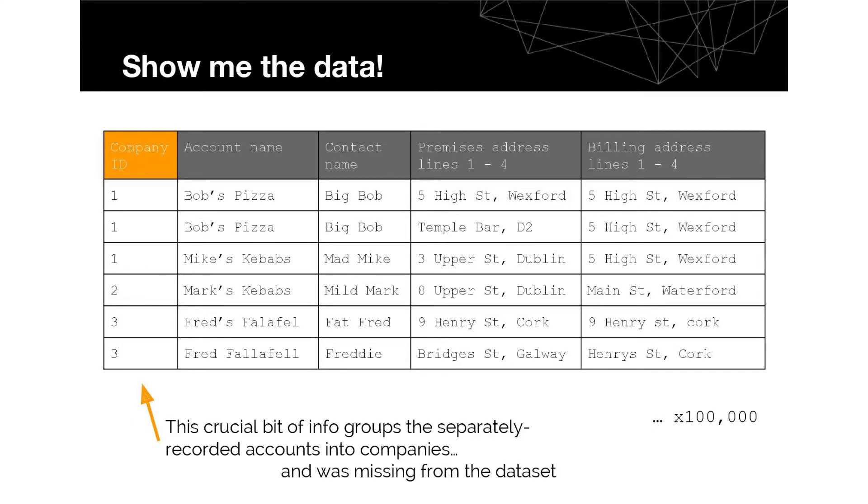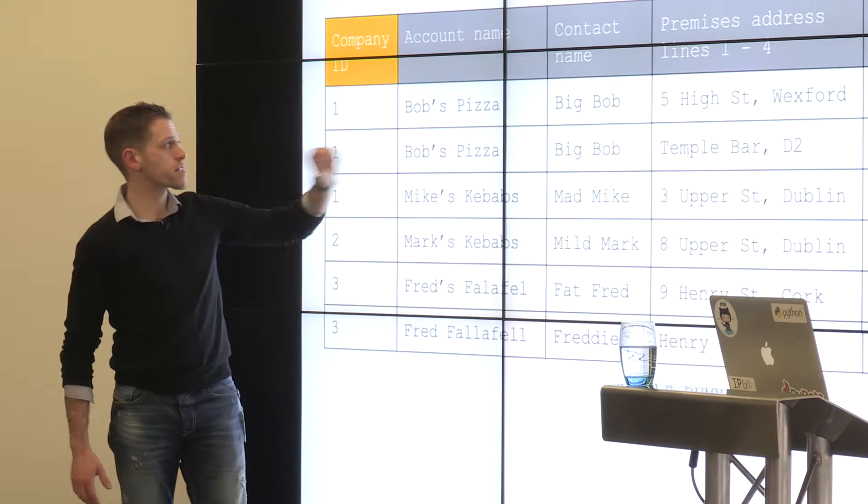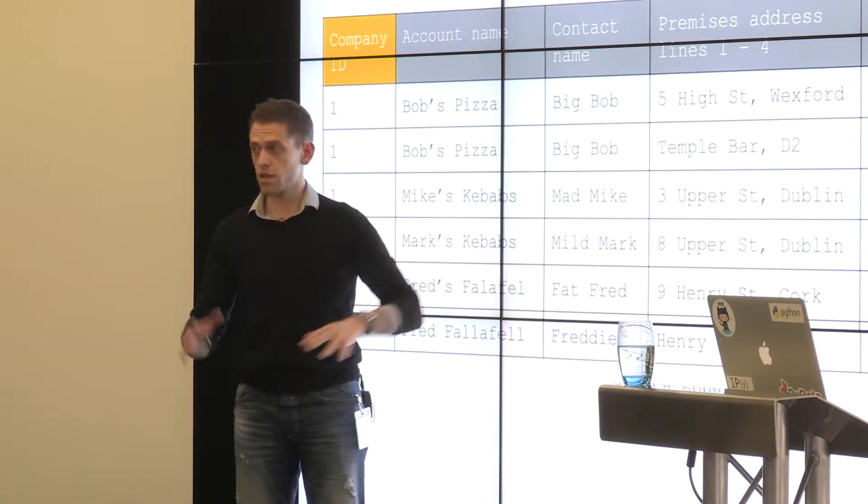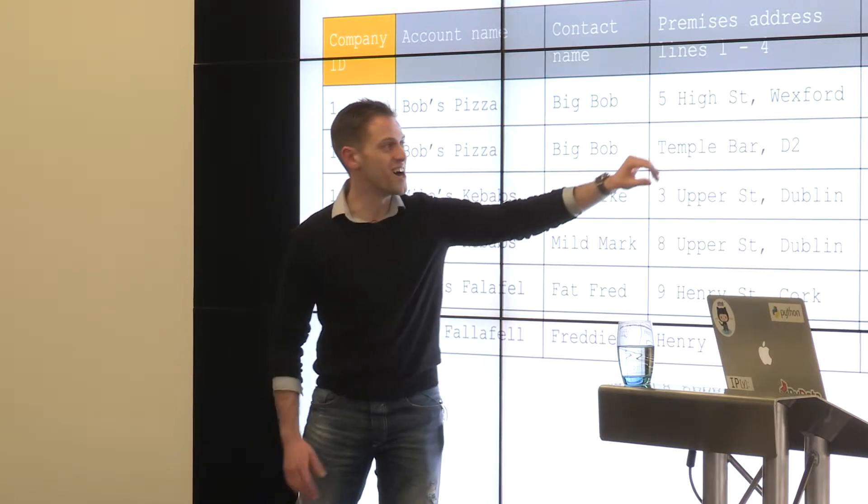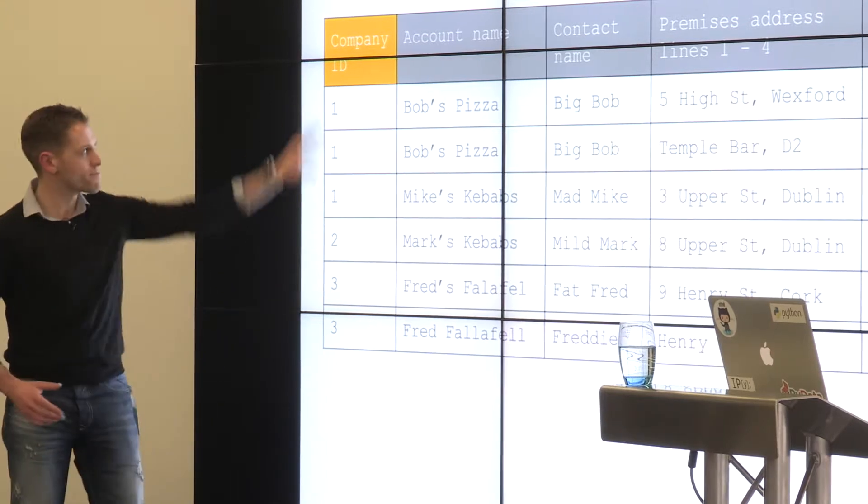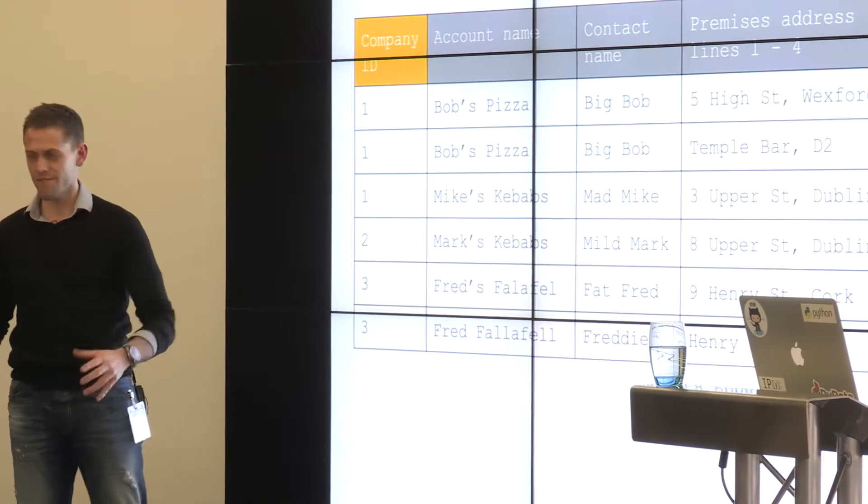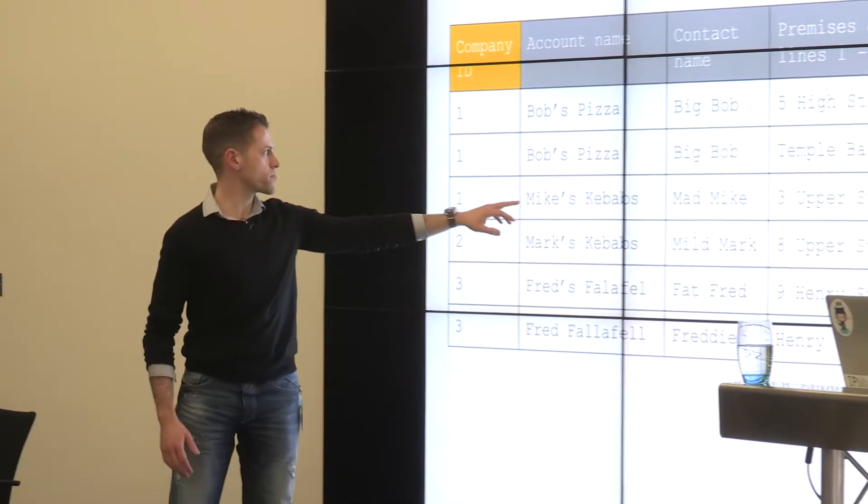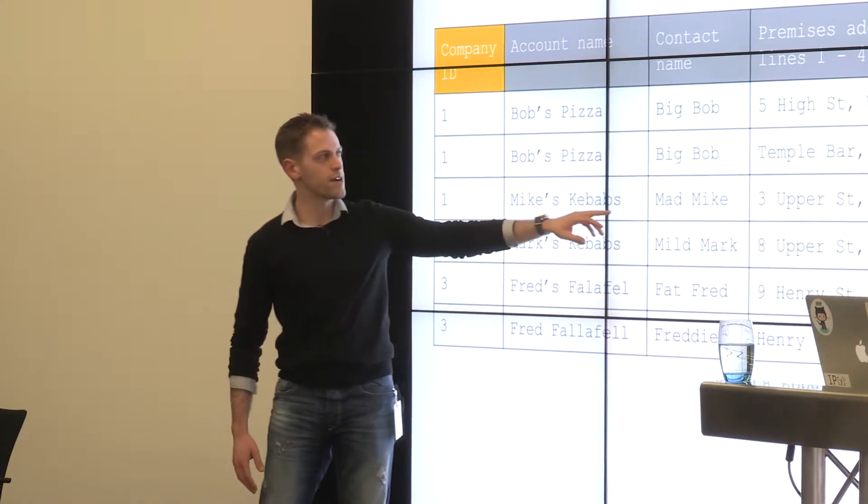Bob's Pizza might be in there twice, and you can order it alphabetically by account name and it more or less turns up. The information that we had was things like account name, contact name, the premises, and a billing address. In this case, Bob's Pizza, a couple of different sites, this is in Ireland by the way, the same billing address. So you could probably order it by account name and figure it out.